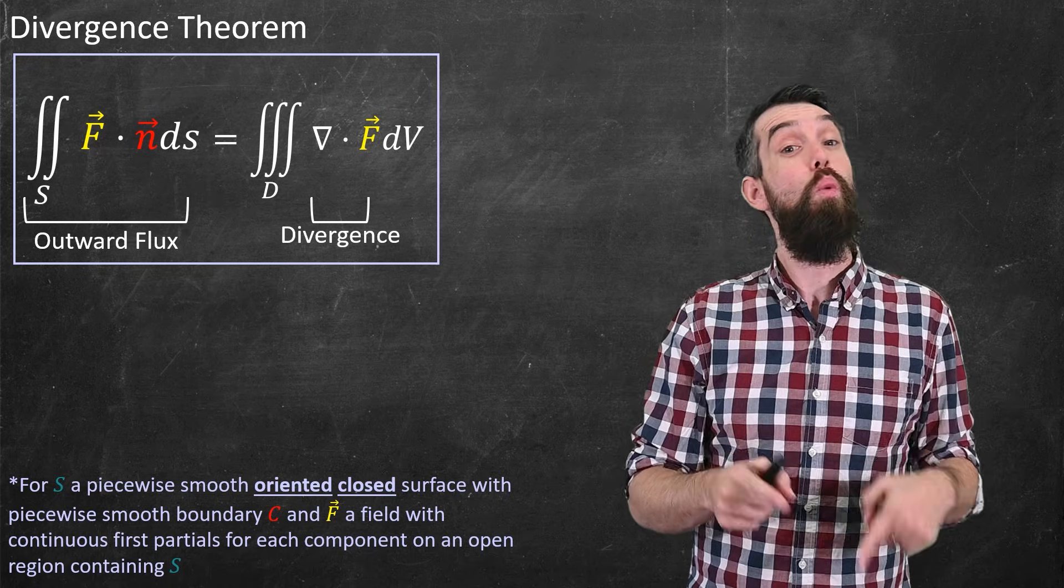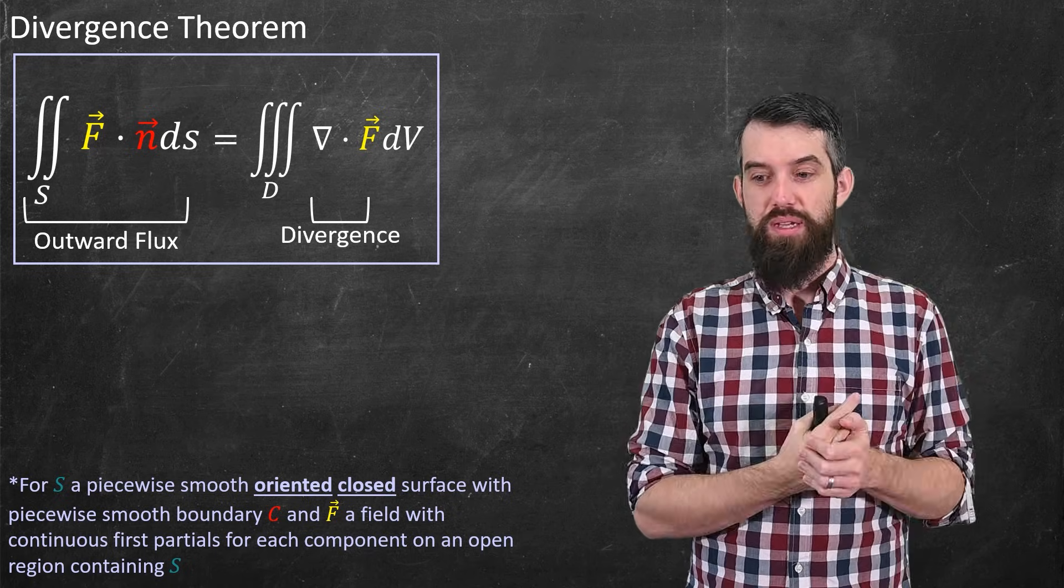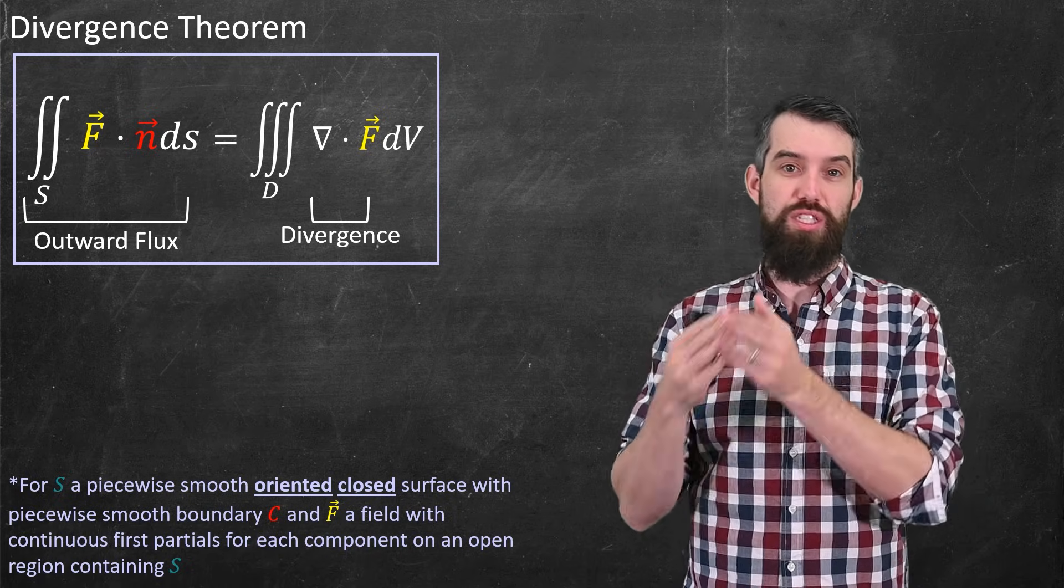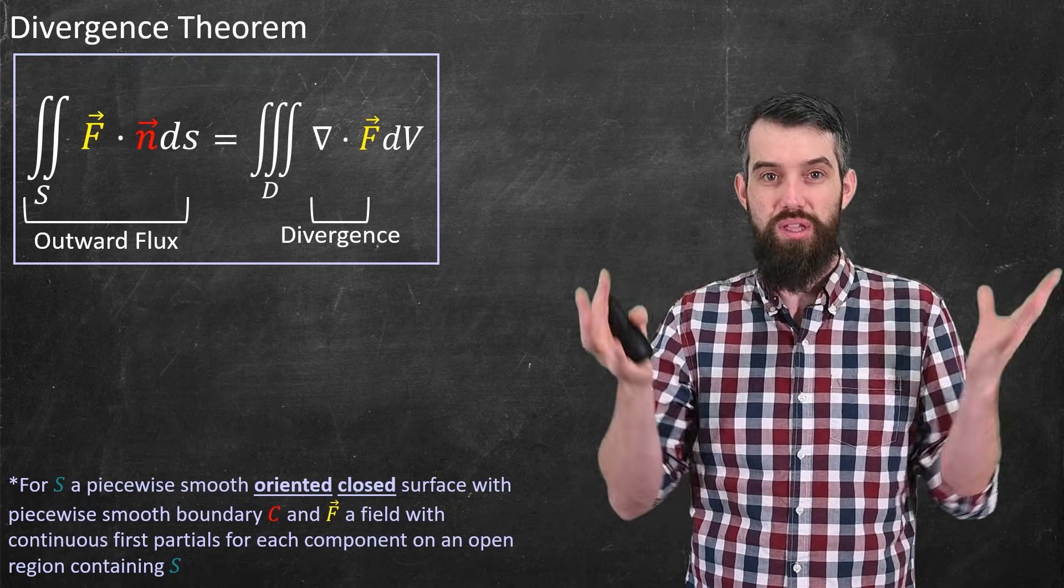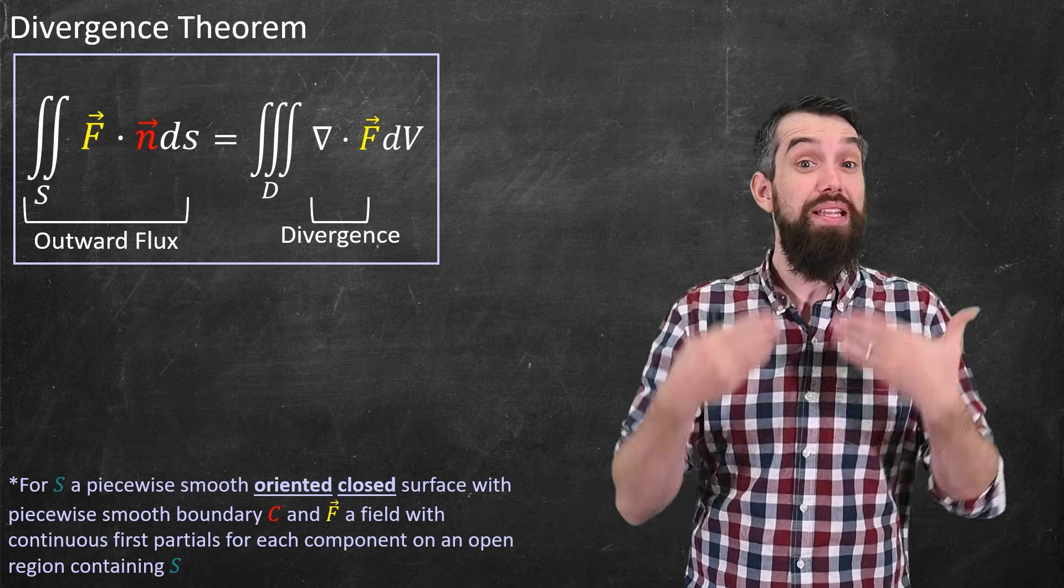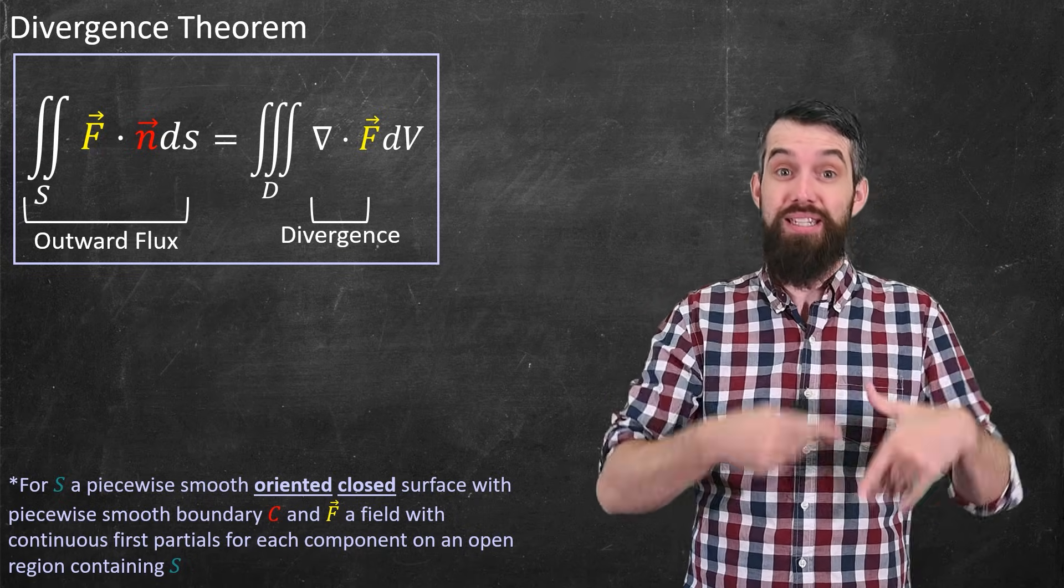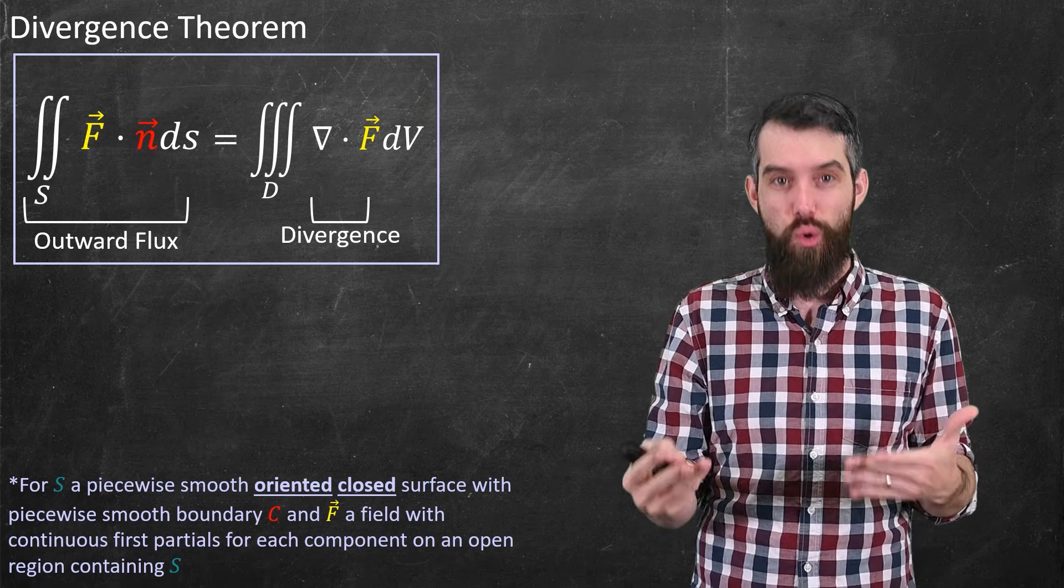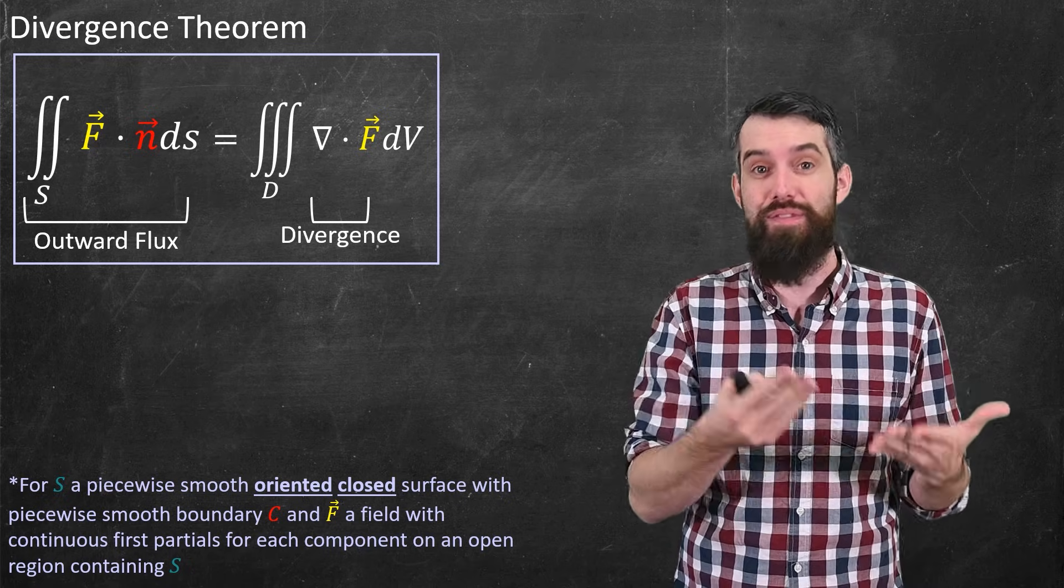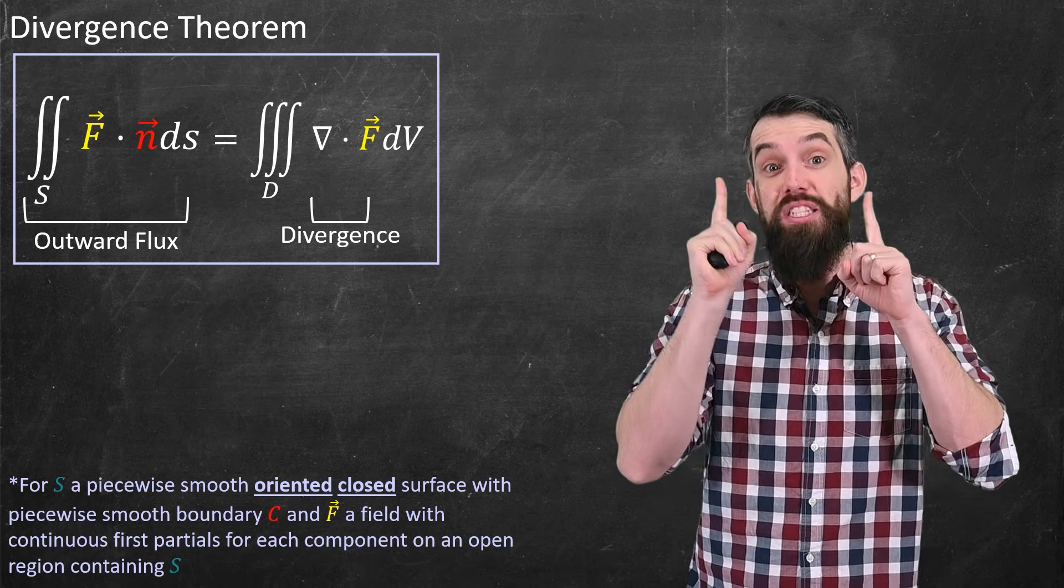Now I need to be clear about what the conditions are for this theorem. So we're talking about a surface, and the surface needs to be nice in the sense of being piecewise smooth, like a sphere or a cube. But in addition, it needs to be both oriented, which means it has two different sides, a continuous specification of those normals, so that I can actually make sense of outward flux, to make sense of F dot n. But in addition, it needs to be closed.